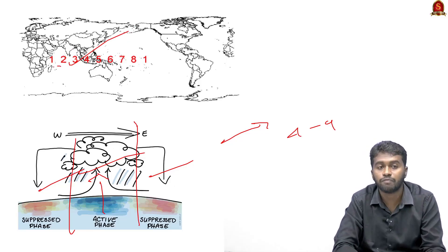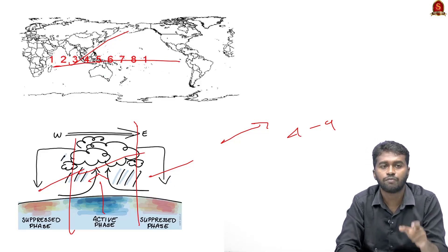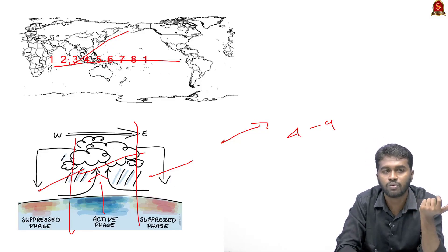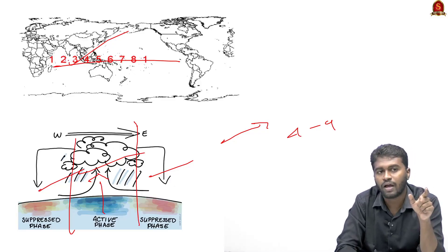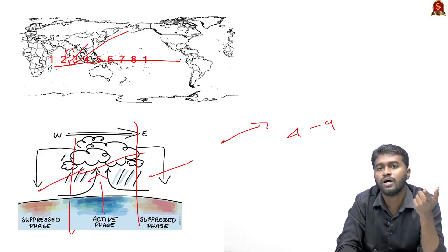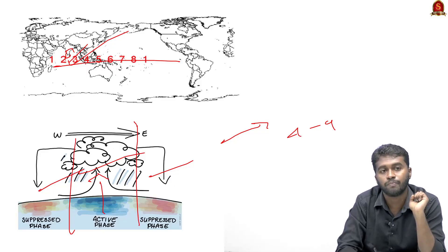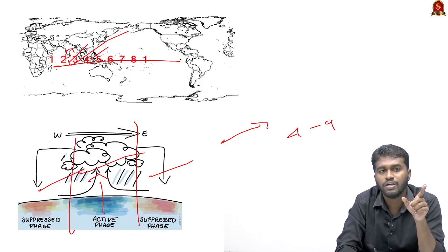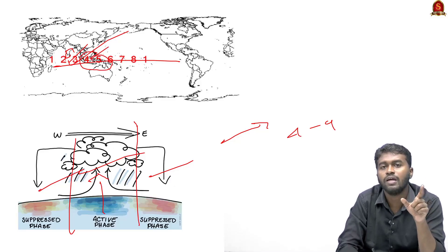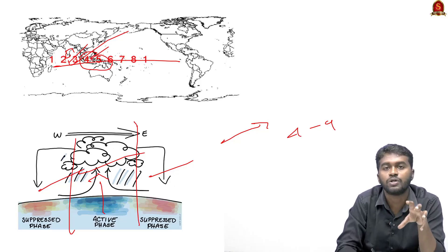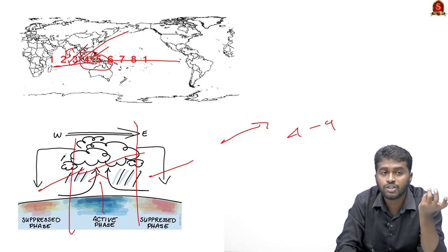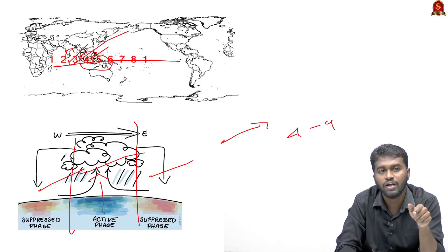Let's discuss the phases. The first active phase forms between phase two and phase three over the Indian Ocean. This enhances the South Asian monsoon, and as a result, South India as well as South Asia will receive heavier rainfall than usual. The next active phase occurs between phase four and five.